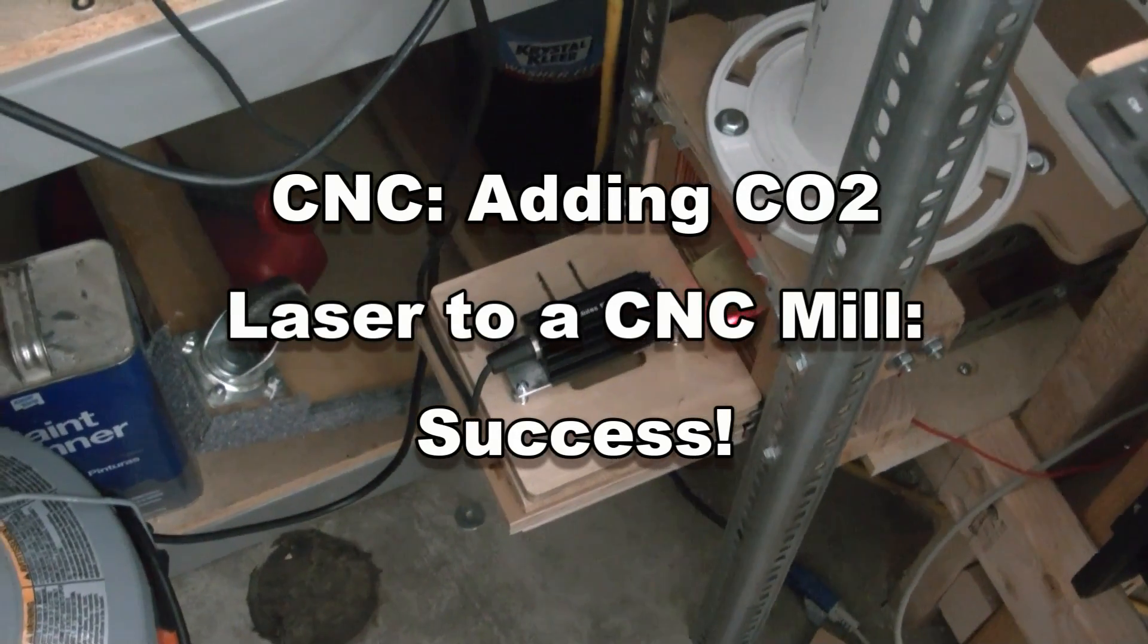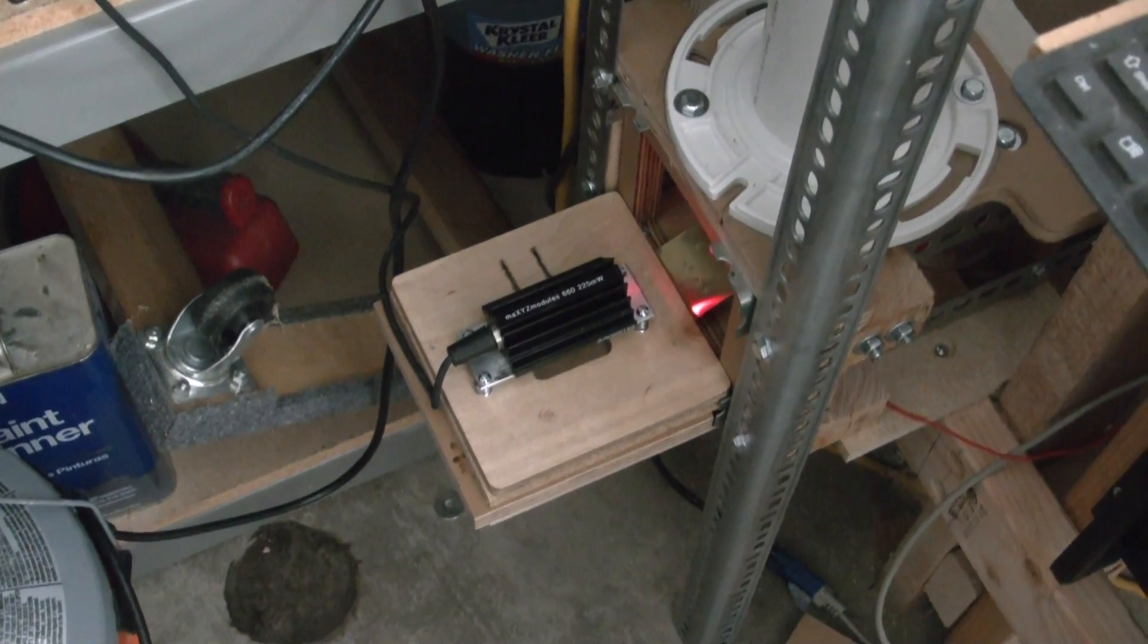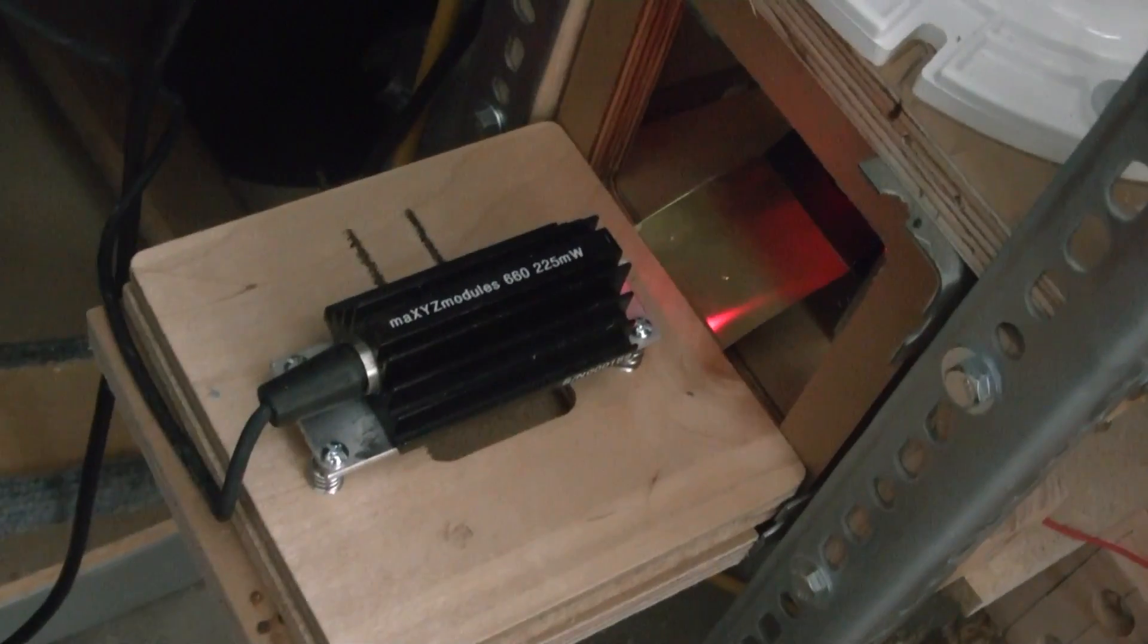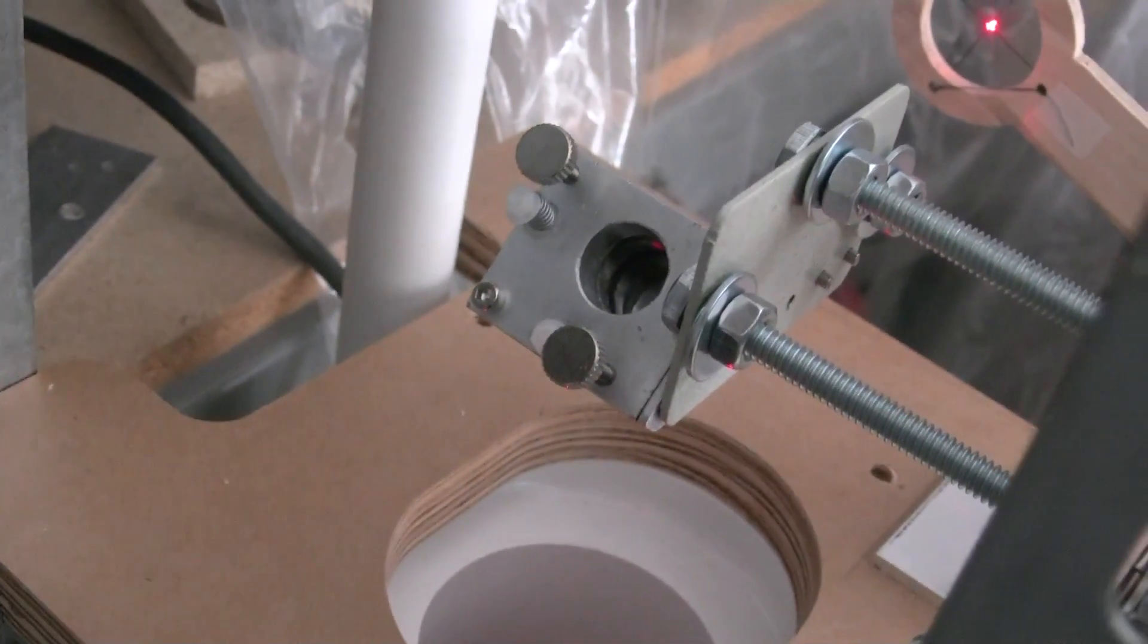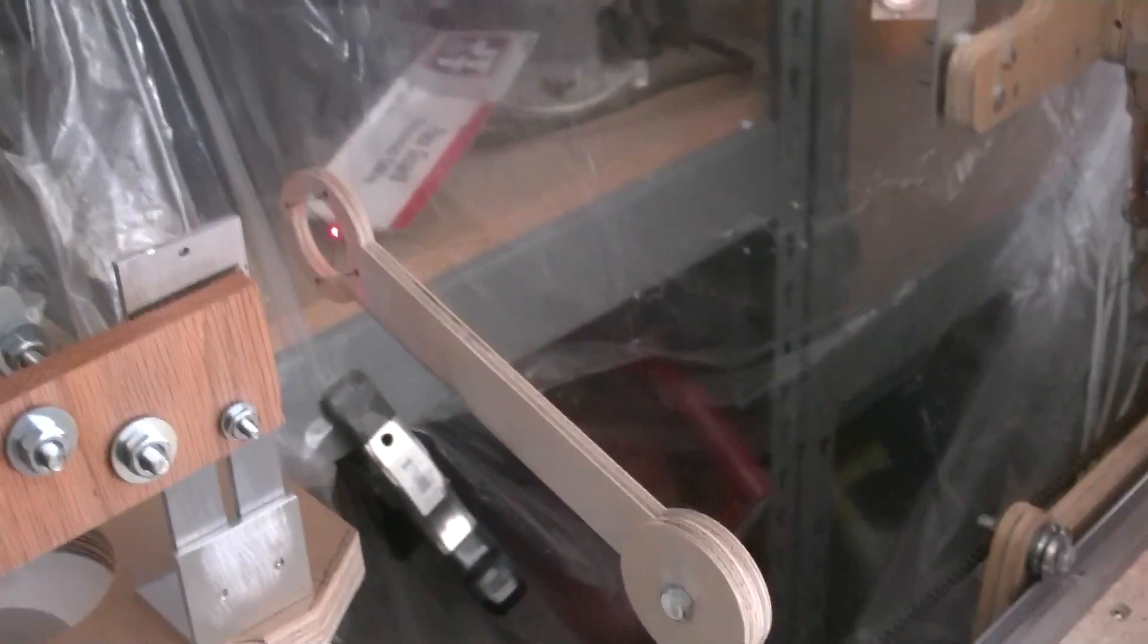Okay, so beam alignment. The first thing that I did was to mount a visible light laser, a red laser, pointing into the laser tube assembly. I flipped the mirror over so the beam is coming up the tube and striking the second bounce mirror here.